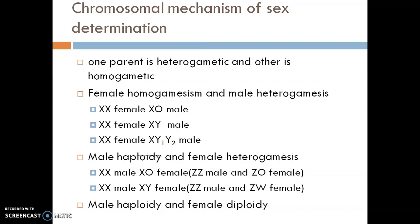Under male homogamesis and female heterogamesis, the mechanisms include ZZ male with Z0 female, and ZZ male with ZW female — using Z notation to avoid confusion with XX/XY systems. There is also the mechanism of male haploidy and female diploidy. We will look into each of these classes separately.